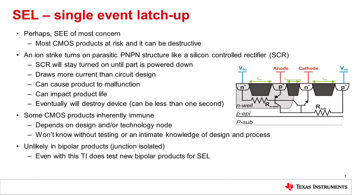Some CMOS products are inherently immune because they don't have PNPN structures that could form an SCR. It is greatly dependent upon the design and/or the technology node, and it's hard to determine which product would be immune unless you have intimate knowledge of the design and the process. Single event latchup is unlikely in standard bipolar products that are junction isolated, but TI still tests new products to verify their SEL immunity levels.